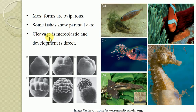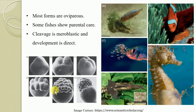The cleavage is meroblastic discoidal type and the development is direct in Osteichthyes, rarely with metamorphosis. In meroblastic discoidal cleavage, only the superficial disc of the fertilized egg undergoes cell division and the cell plate develops into the whole individual, while the vegetal pole does not divide. This is the most common kind of cleavage found among these species.